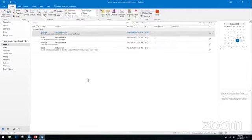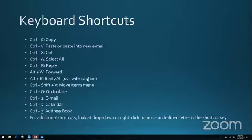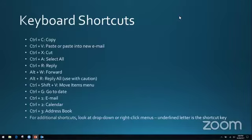Going back to keyboard shortcuts — some of these are going to be pretty basic, things you already know how to do, and some will be a little bit unique to Outlook. Everybody probably knows Control+C for copy, Control+V for paste, Control+X to cut, and Control+A to select all. What's neat about Control+V is that if you copy a line or block of text and then use Control+V, it will immediately pop open a new email window, so you can select text and open a new email without clicking a bunch of buttons.